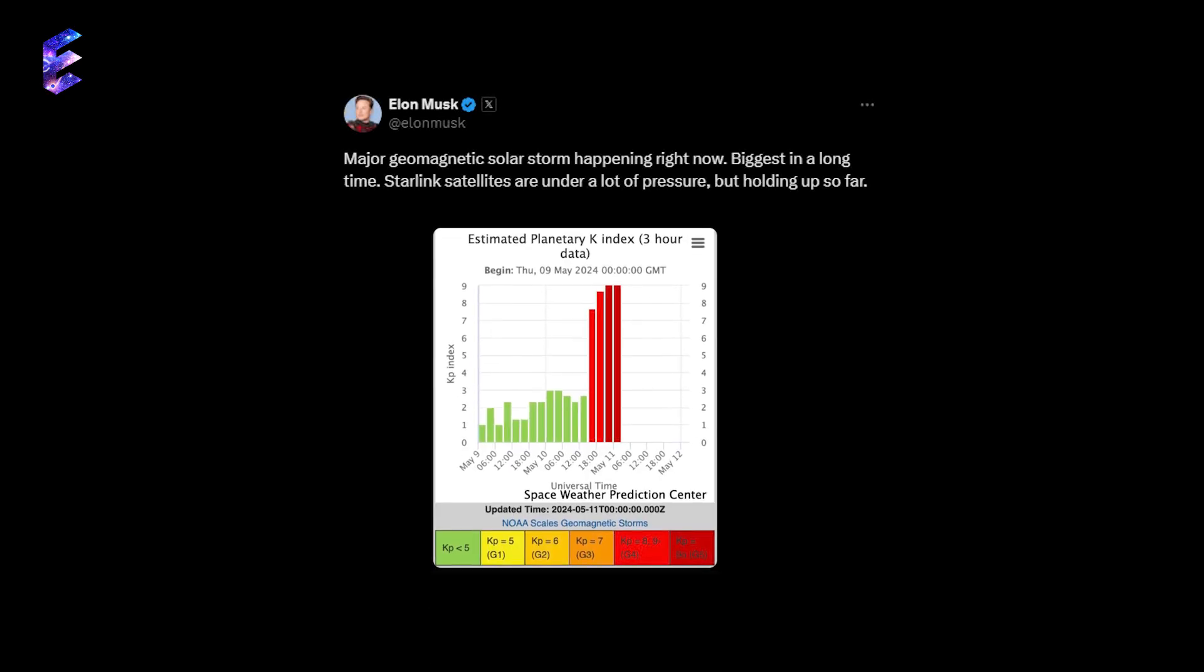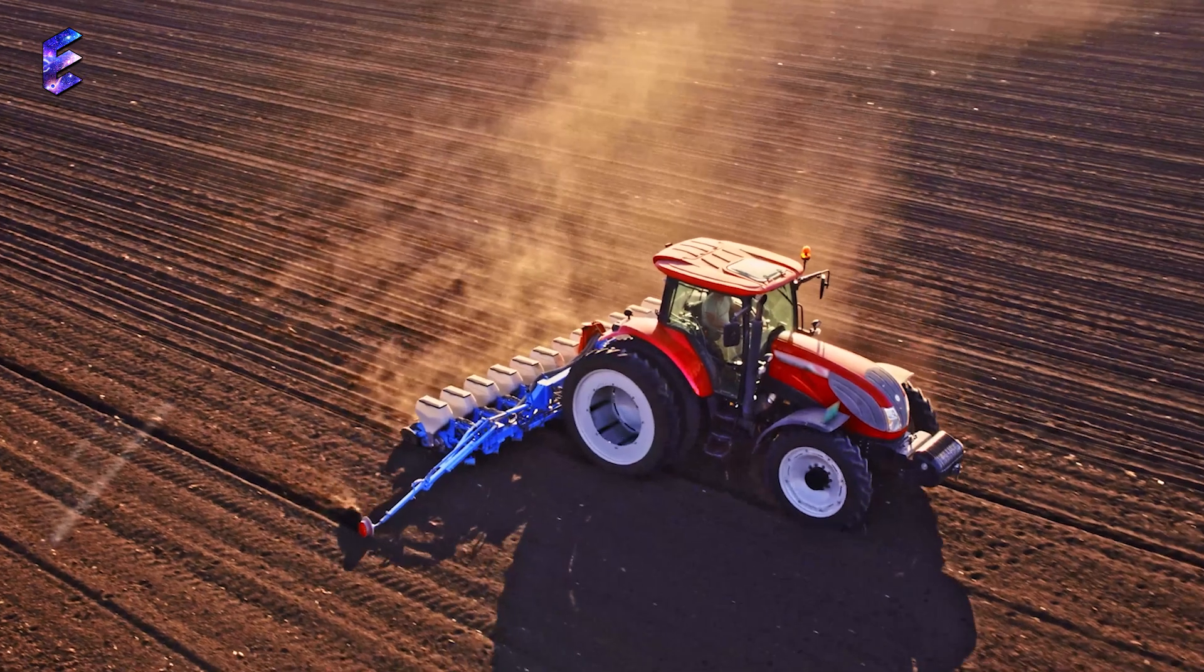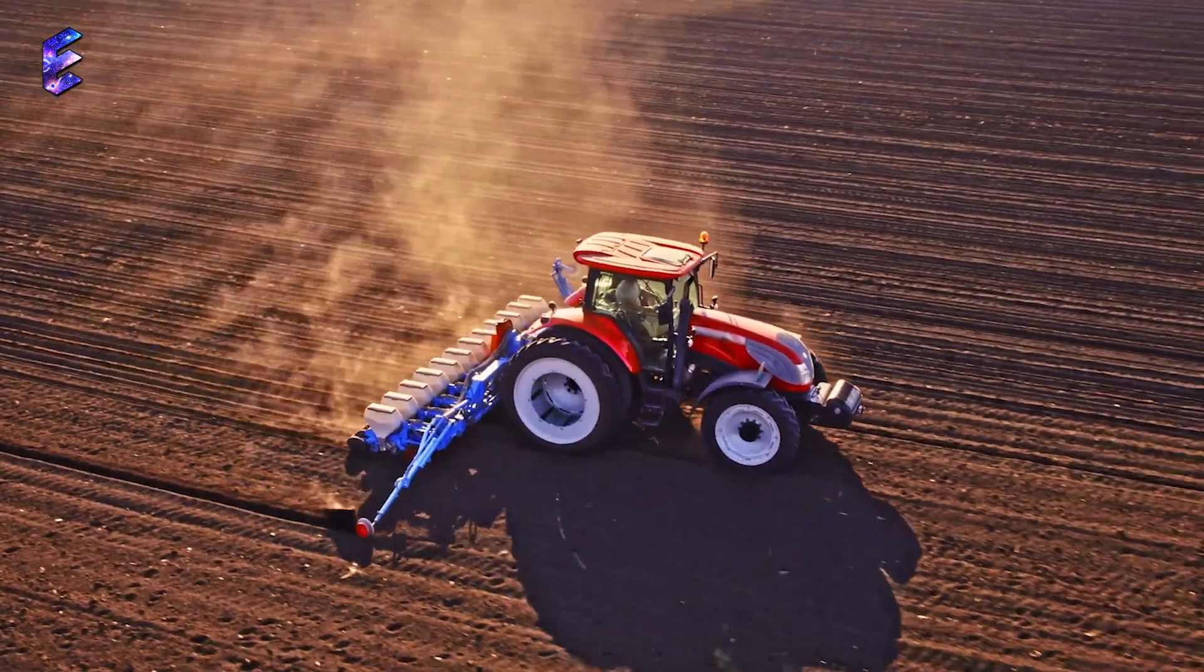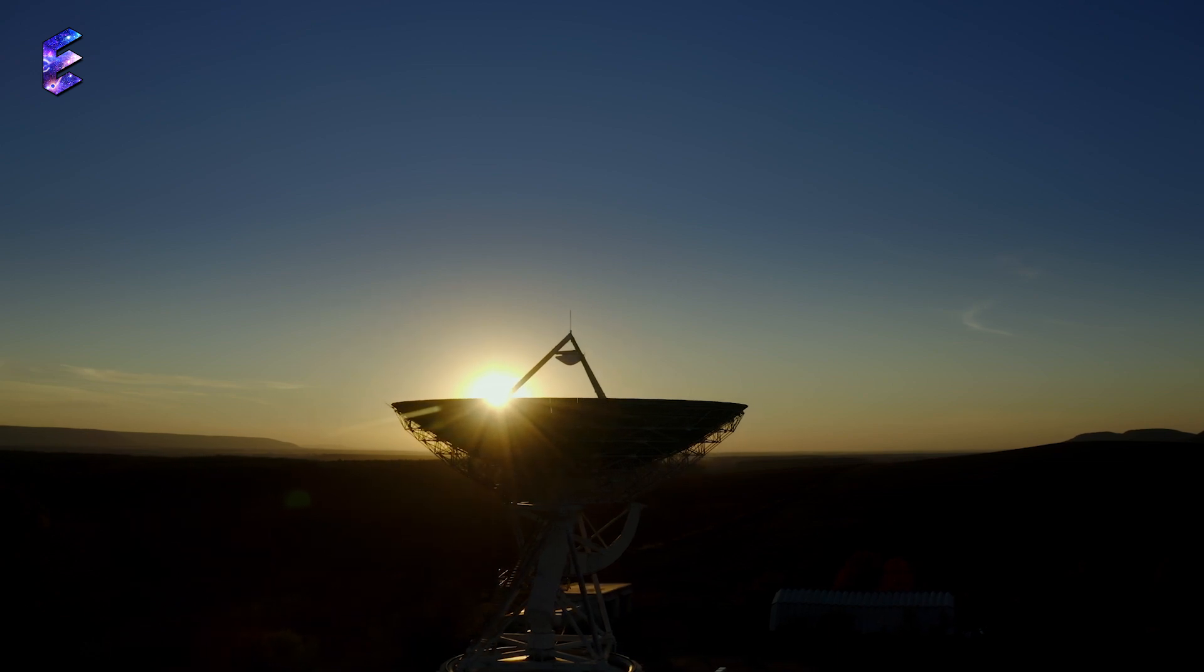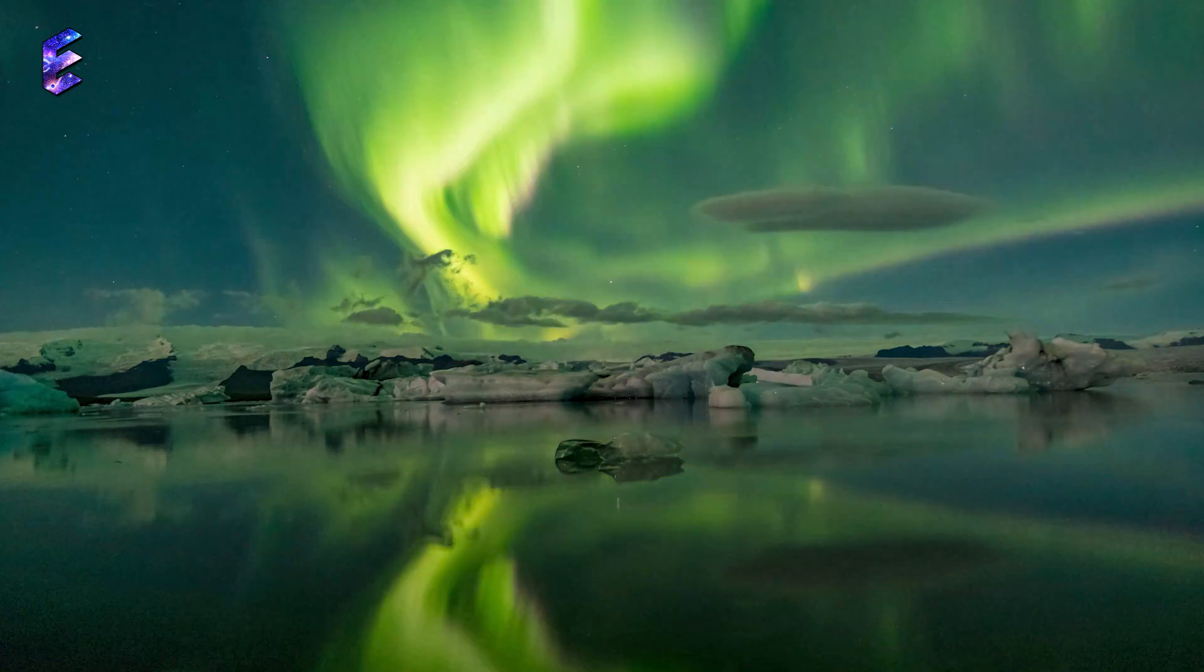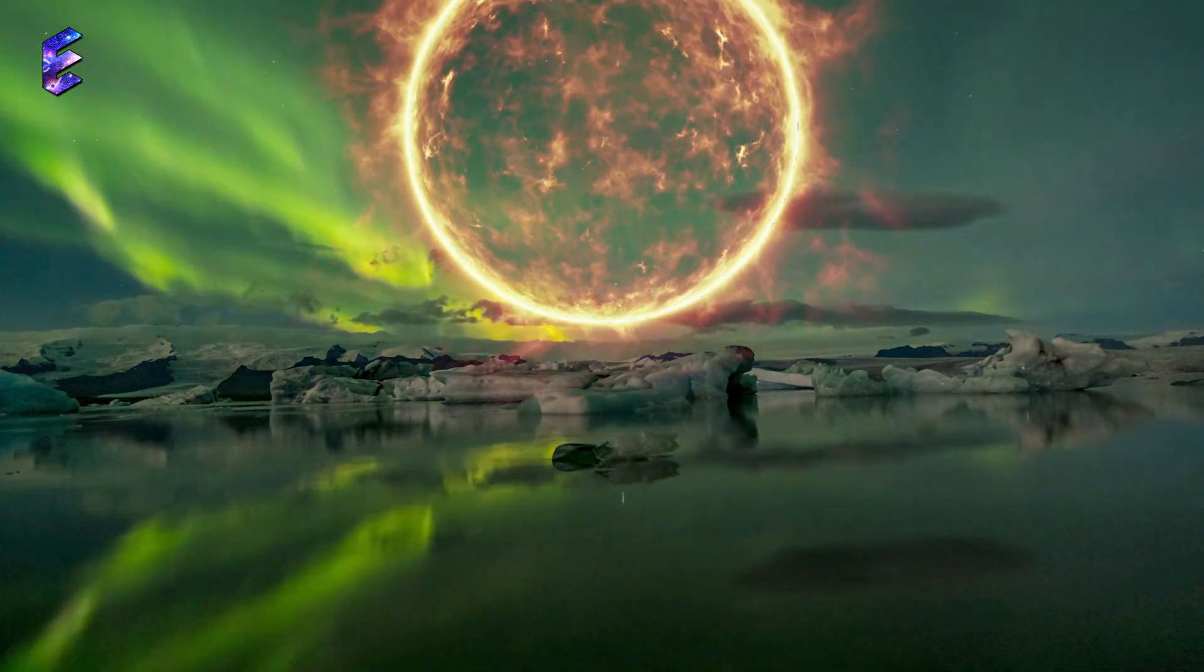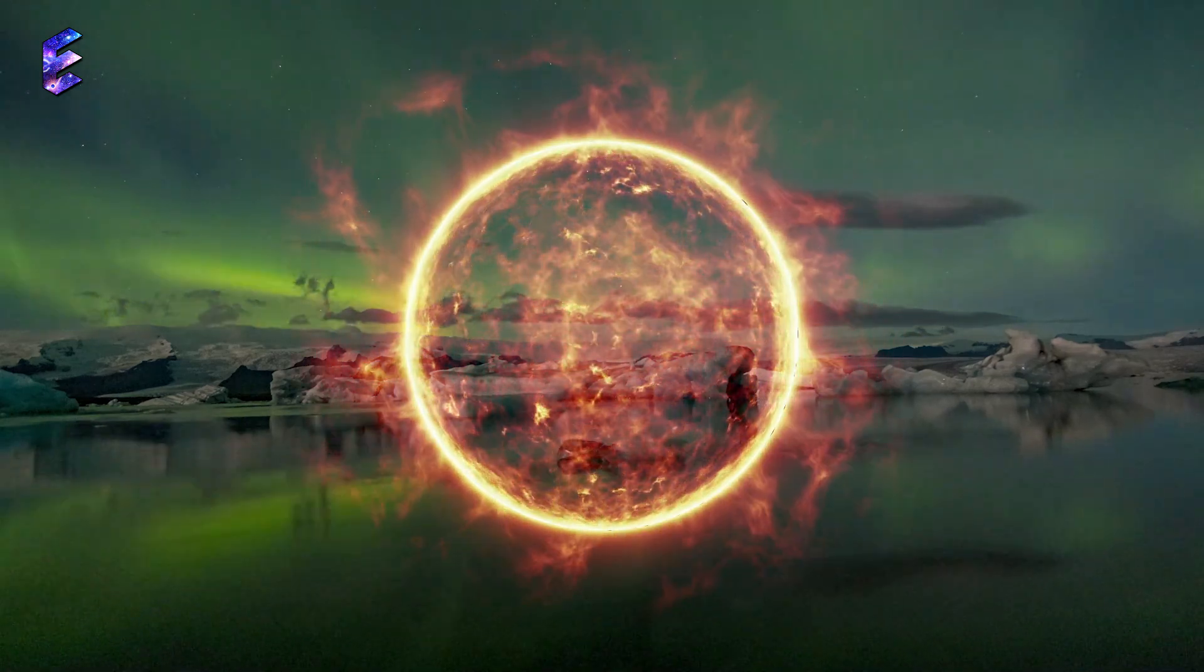But even this solar storm was not completely benign. Elon Musk wrote on X that his Starlink satellites were under a lot of pressure, and reported glitches. Apart from that, farmers who used GPS satellites to steer their tractors reported anomalies, and high-frequency radio communications suffered interference for a while. Sometimes ethereally bewitching, and at other times terrifying, these events are a beautiful reminder of the immense influence our mighty Sun has on us.